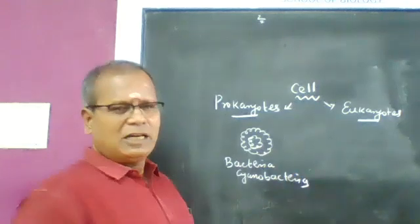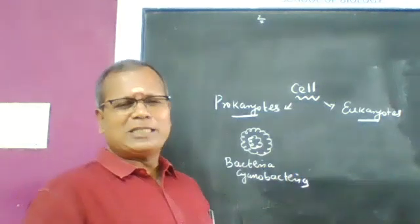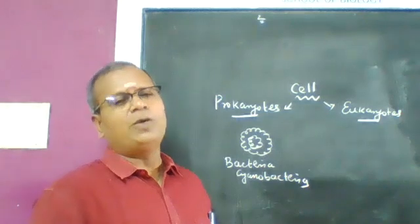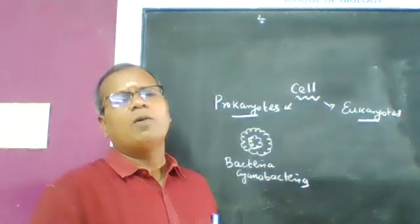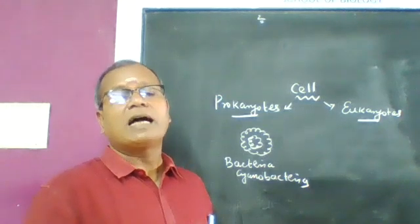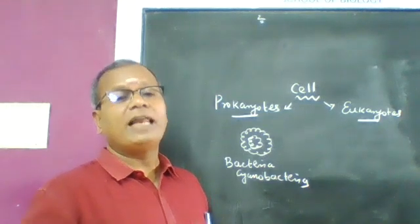According to the Five Kingdom System of Classification by Whittaker, unicellular prokaryotic organisms come under the kingdom Monera.